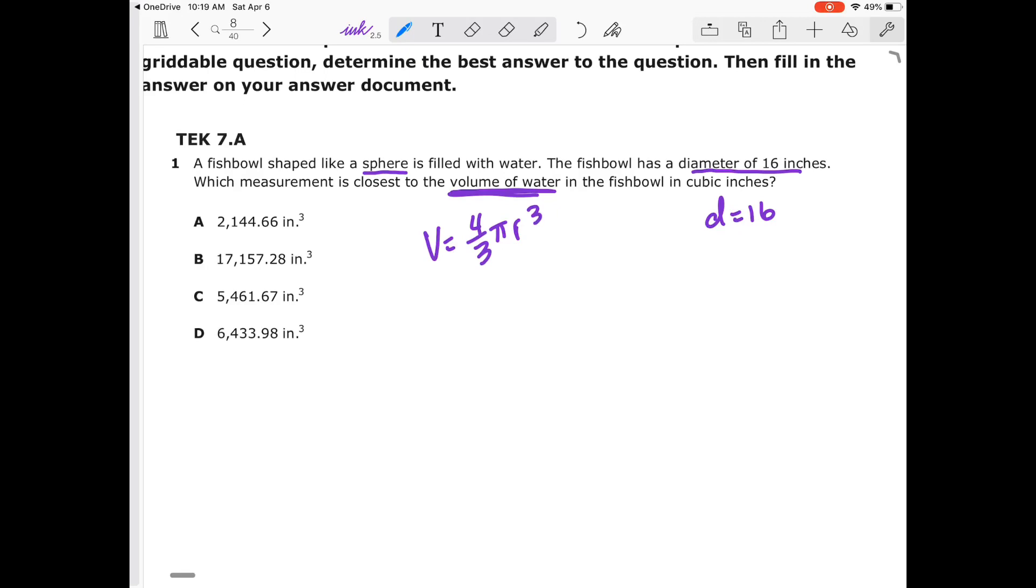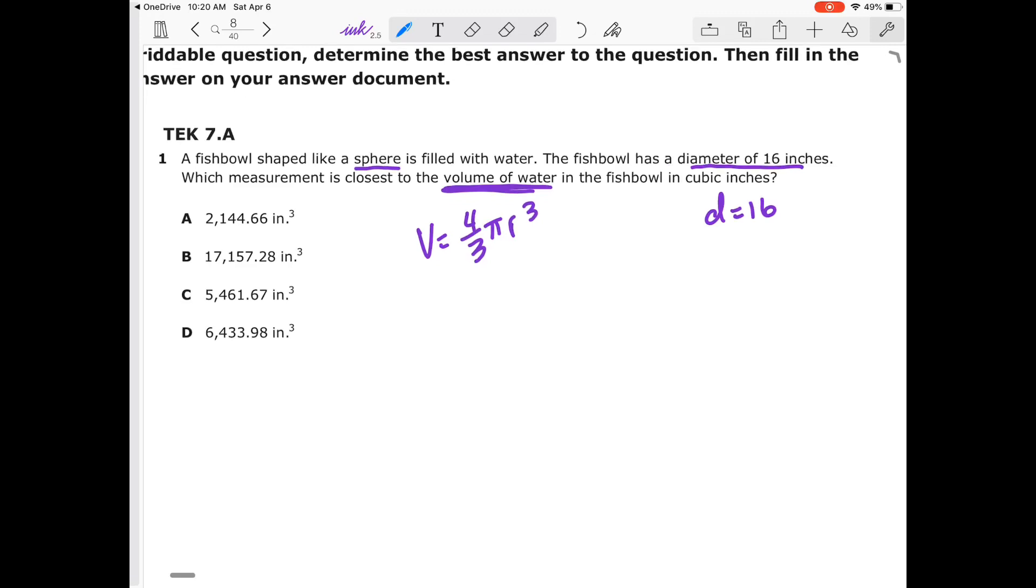I'm not going to scroll over and look at it because that's going to be a pain in the butt. Just know that it is in your reference material under volume. I need my radius. I'm given my diameter. Well, radius is half the diameter. Half of 16 will give me 8.